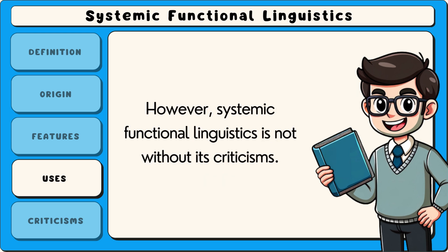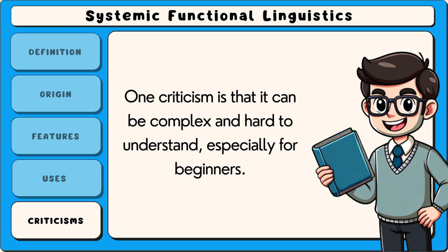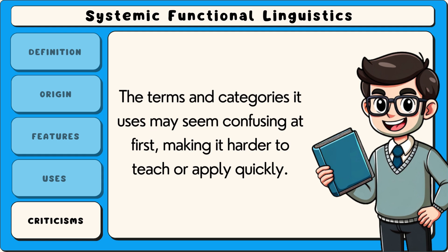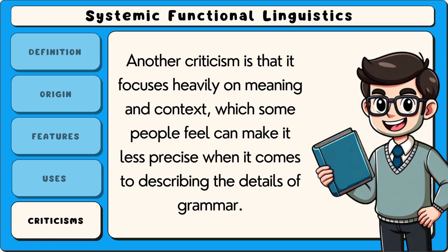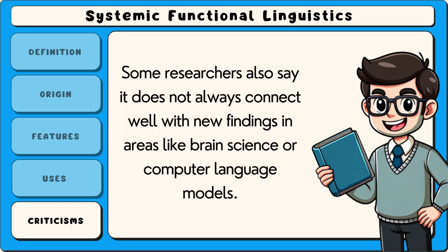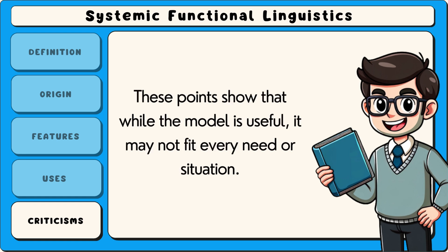However, systemic functional linguistics is not without its criticisms. One criticism is that it can be complex and hard to understand, especially for beginners. The terms and categories it uses may seem confusing at first, making it harder to teach or apply quickly. Another criticism is that it focuses heavily on meaning and context, which some people feel can make it less precise when it comes to describing the details of grammar. Some researchers also say it does not always connect well with new findings in areas like brain science or computer language models. These points show that while the model is useful, it may not fit every need or situation.